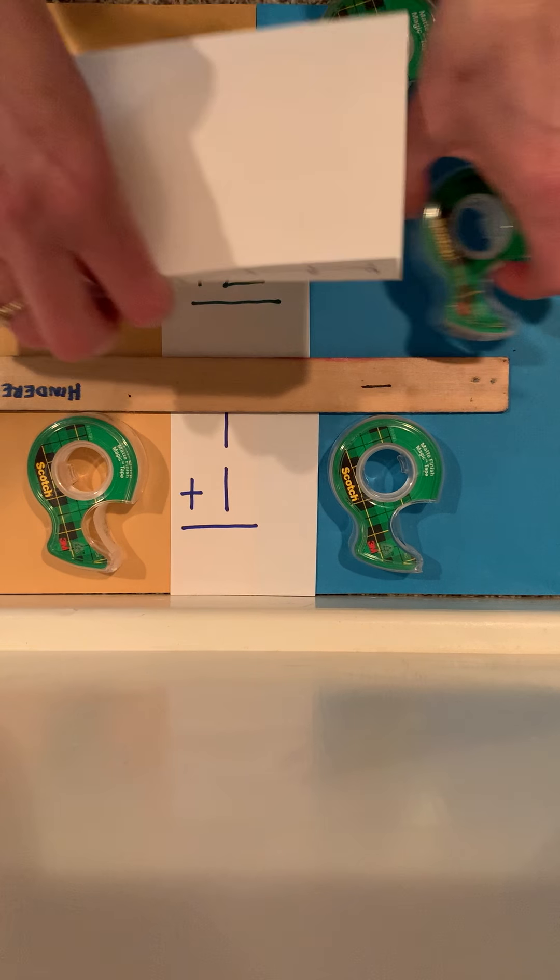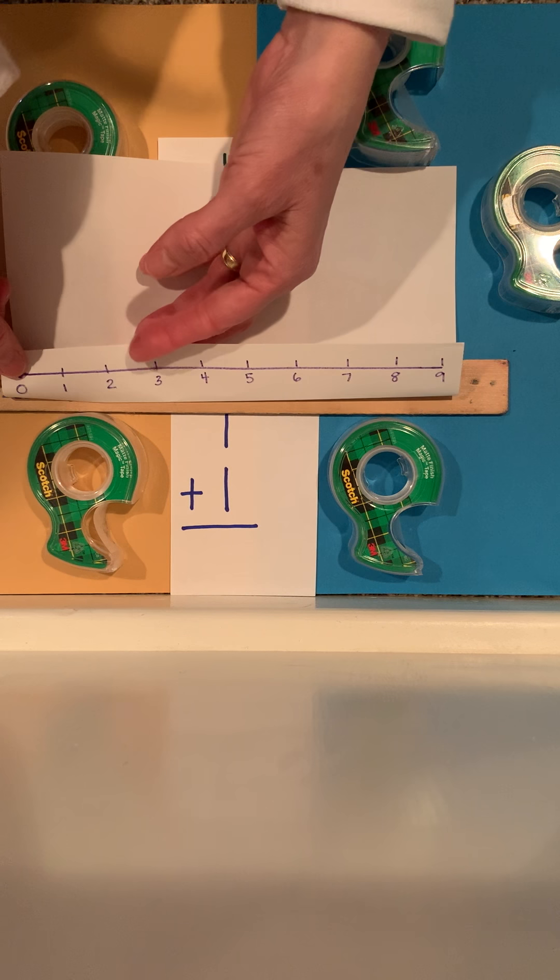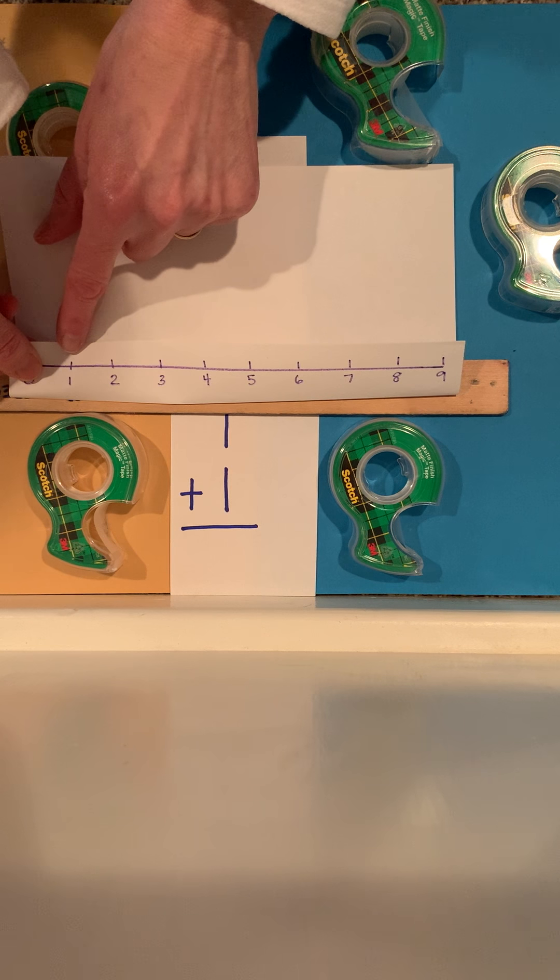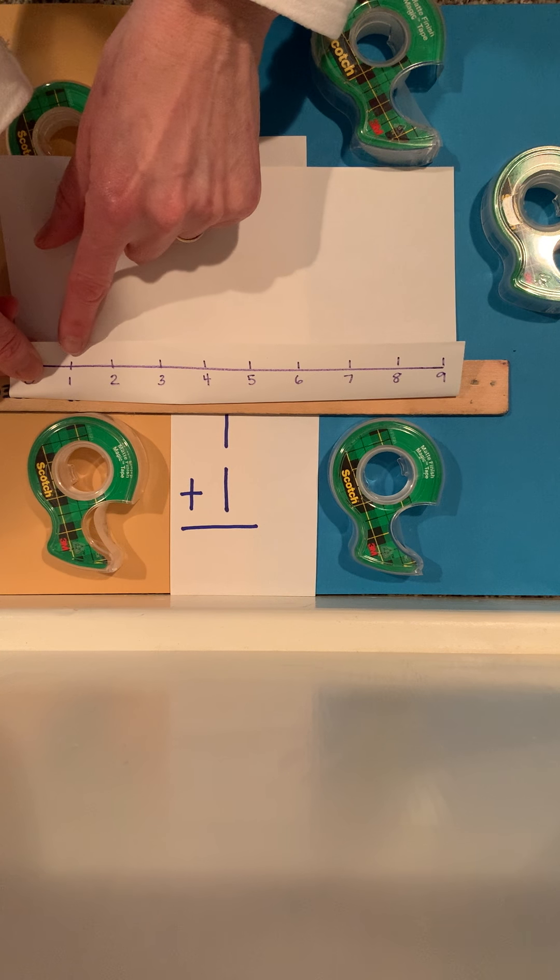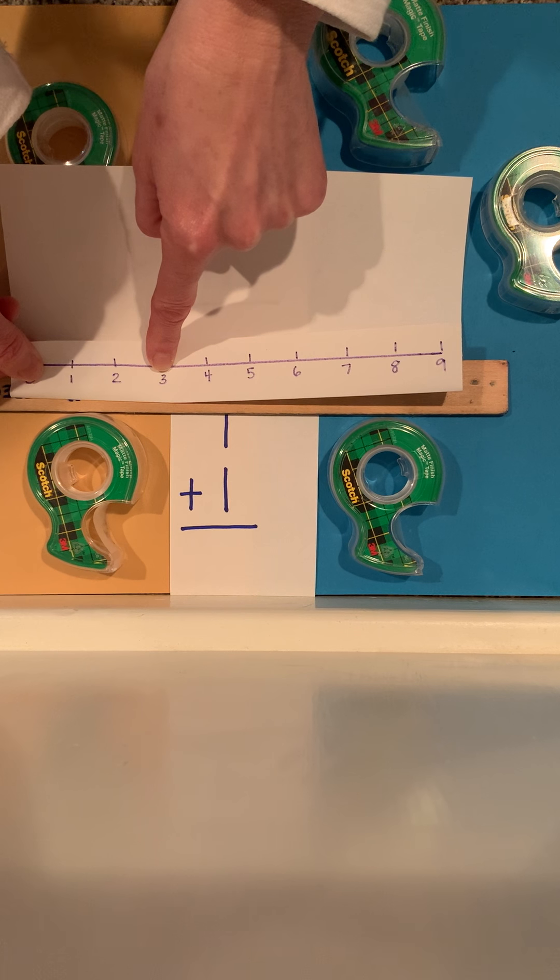I can also look at it on my number line. If I start with my smallest number, 1, and I jump 2 more, 1, 2, my answer is 3.